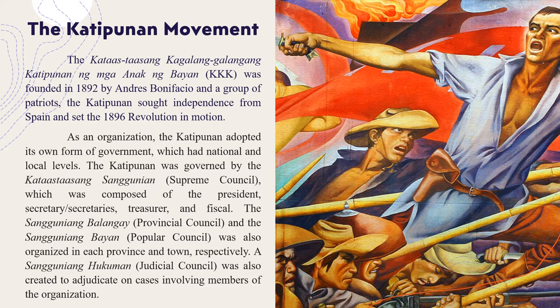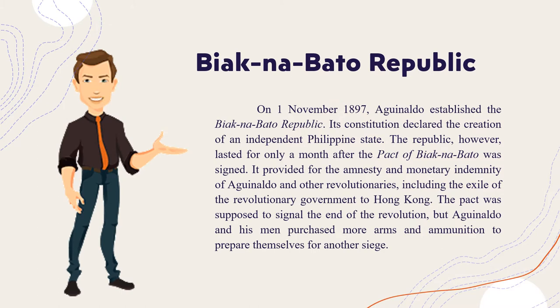Events led to the division of the Katipunan into two factions: Magdalo and Magdiwang. The Spaniards were about to make an offensive in Cavite and a unified leadership was deemed necessary. So on March 22, 1897, the Tejeros Convention was called where General Emilio Aguinaldo was elected as President. On November 1, 1897, Aguinaldo established the Biak na Bato Republic. Its constitution declared the creation of an independent Philippine state. The Republic, however, lasted for only a month after the Pact of Biak na Bato was signed. It provided for the amnesty and monetary indemnity of Aguinaldo and other revolutionaries, including the exile of the revolutionary government to Hong Kong. The Pact was supposed to signal the end of the revolution.